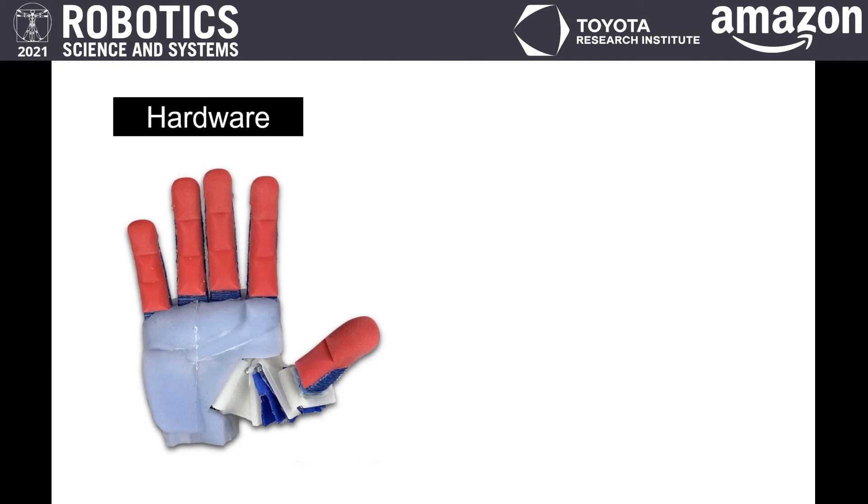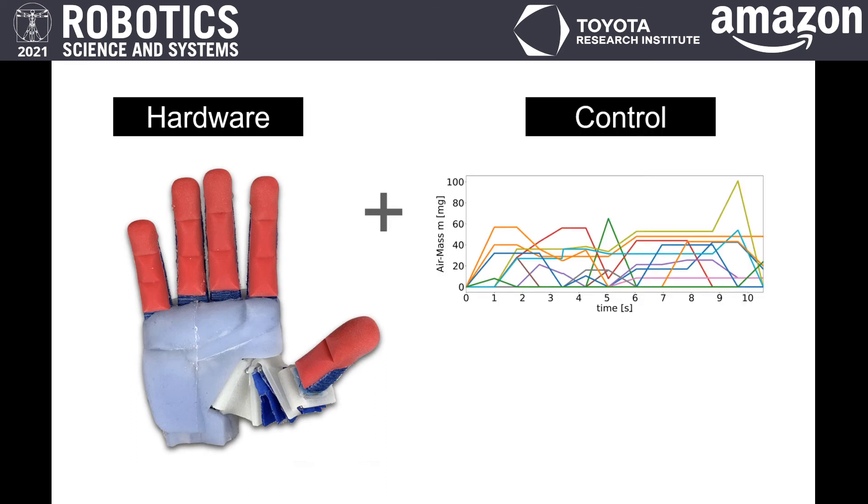In conclusion, we have shown that we can reduce the complexity of in-hand manipulation by splitting the problem in two. First, we choose our hardware to match the inherent complexity of the problem. And second, by tailoring our control scheme to the hardware, we can exploit this reduced complexity to design dexterous manipulations.